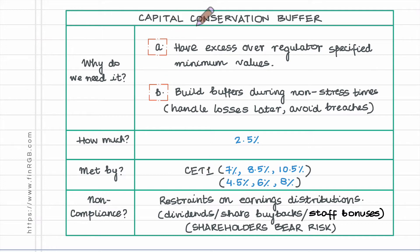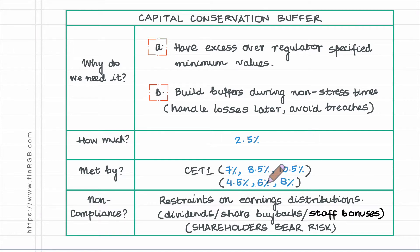Without the CCB requirement, we know that the core equity tier one capital of a firm should be at least four and a half percent of risk weighted assets. The total tier one should be at least six percent of risk weighted assets.